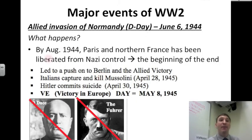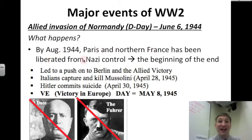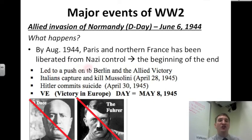By August 1944, Paris and northern France has been liberated — freed from Nazi control. And this is the beginning of the end for the Nazis. It led to a push all the way back to Berlin, the capital of Germany, and to Allied victory.